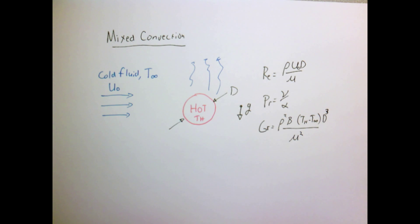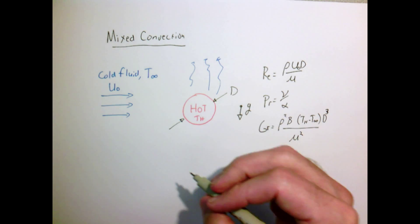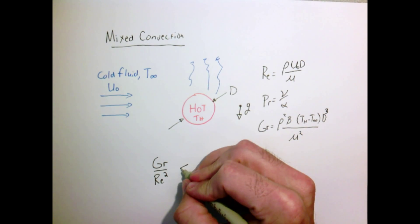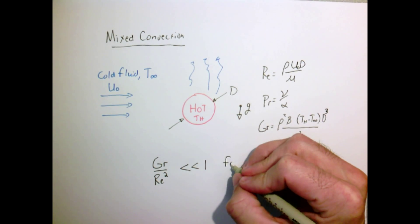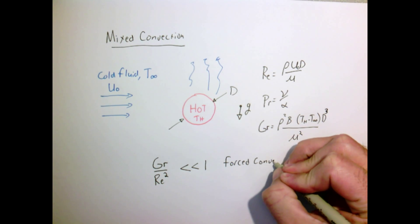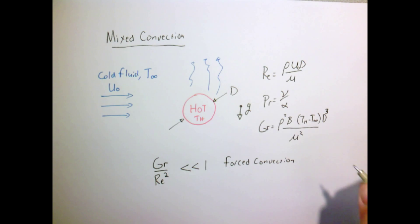If we wanted to understand whether this problem here was forced convection or natural convection, we'd just have to take the following ratio. We'd take the ratio of the Grashof number to the square of the Reynolds number. It turns out if that ratio is much, much less than 1—so it's a small number—it's Reynolds number dominated by the velocity that we're forcing, so we're in the region of forced convection.